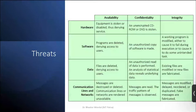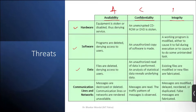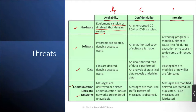The next threats relate to the CIA triad: Availability, Confidentiality, and Integrity. These apply across hardware, software, data, communication lines, and networks. For hardware availability, if equipment is stolen or disabled, it denies services — switching off hardware can create a big availability issue.